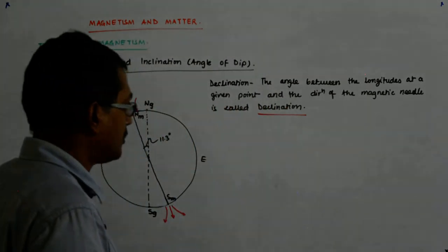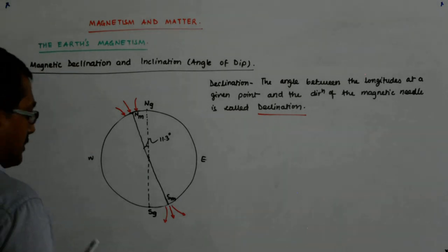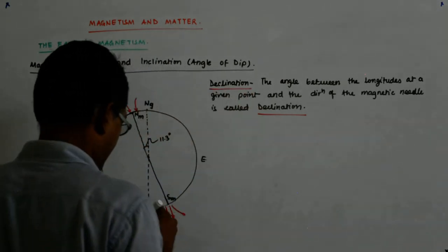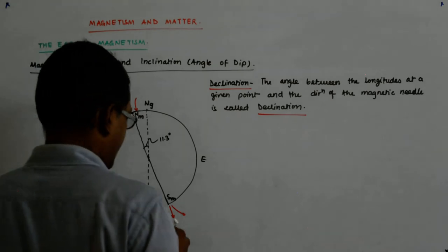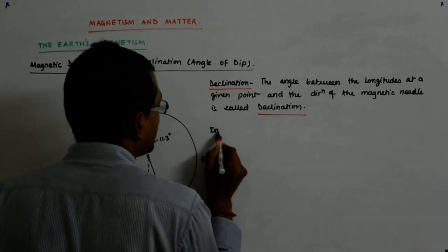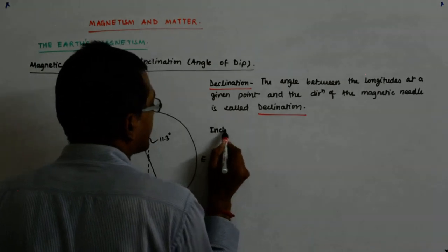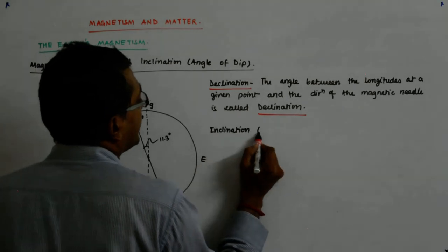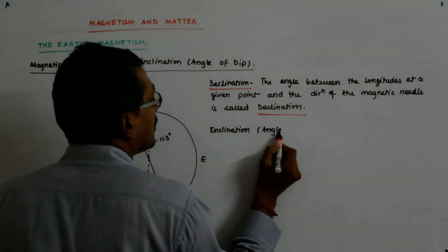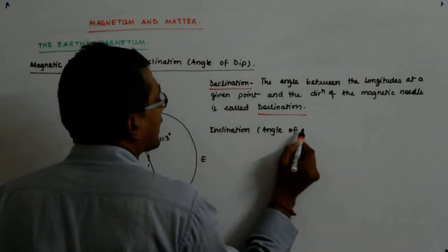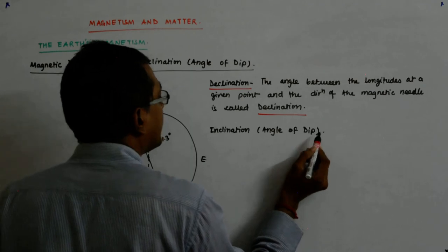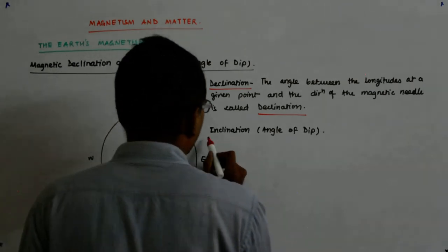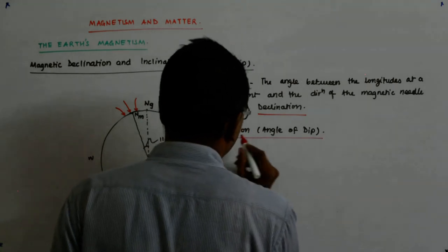Now I come to inclination, which is also known as angle of dip. This is declination — now I come to inclination which is also called angle of dip.